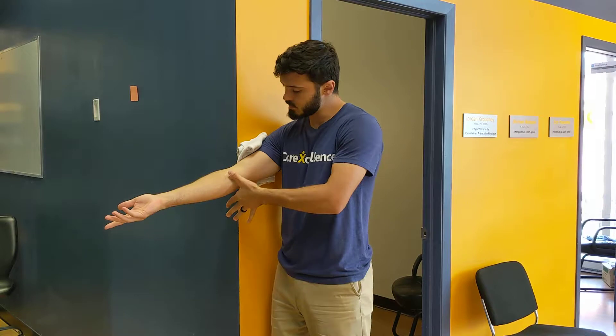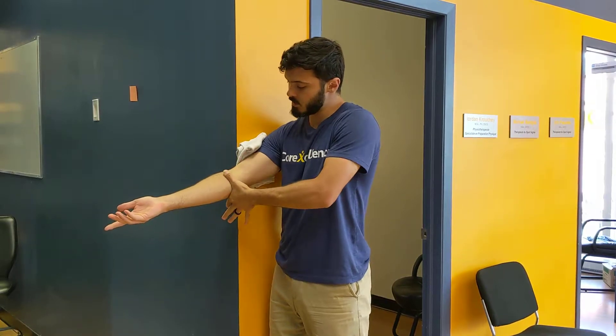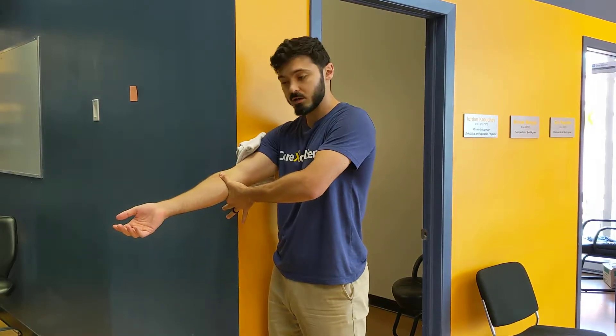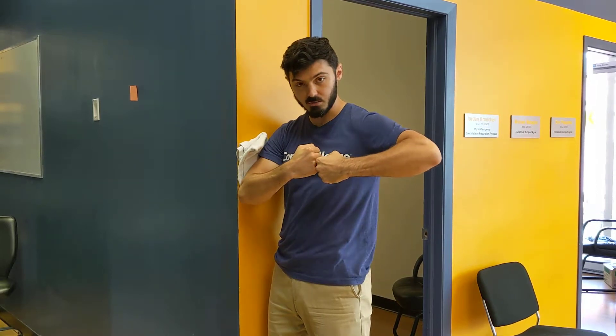From here, I'm going to put my hand just below the elbow and push to the side, as if I want to make the elbow glide this way.